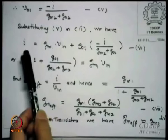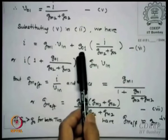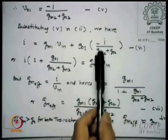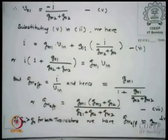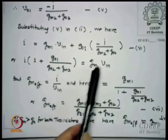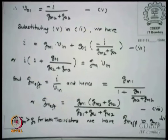From the M2 equation, Vo1 can be derived as: Vo1 = −I / (Gm2 + Go2). I then substitute this Vo1 into the M1 equation. Doing this, I get: I = Gm1 × Vin + Go1 × Vo1, with Vo1 replaced by −I/(Gm2 + Go2). Collecting I terms: I × (1 + Go1/(Go2 + Gm2)) = Gm1 × Vin, and therefore Gm_effective = I/Vin = Gm1 × (Gm2 + Go2) / (Go1 + Go2 + Gm2).